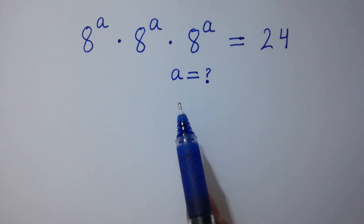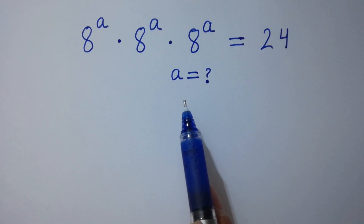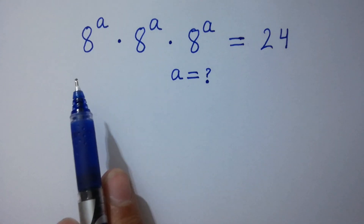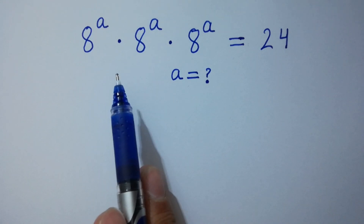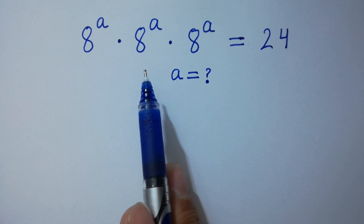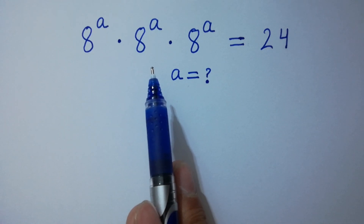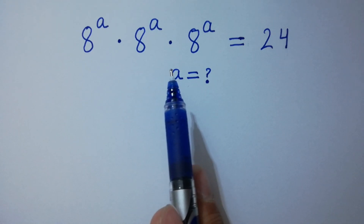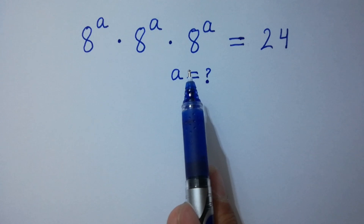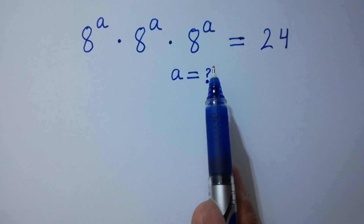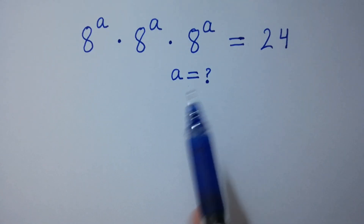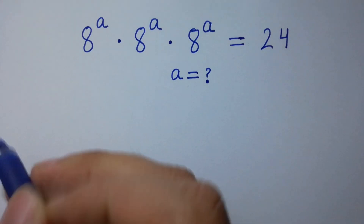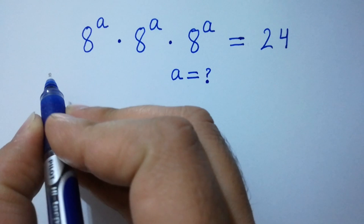Hello friends. Find the value of a if 8 to the power a times 8 to the power a times 8 to the power a equals 24. Let's have a solution.